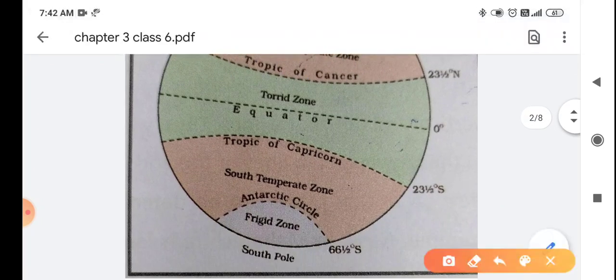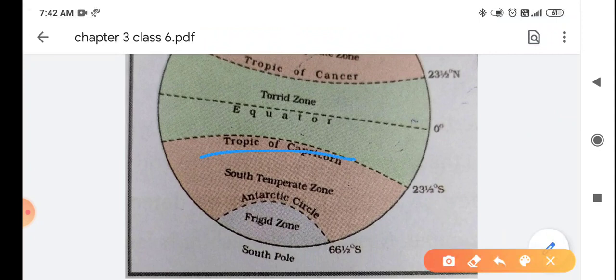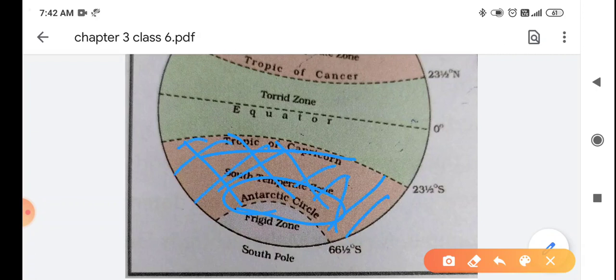This is Temperate Zone and it is in North side that is why it is called North Temperate Zone. And on the South side, Tropic of Capricorn and Antarctic Circle is this area that is Temperate Zone. And it is in South. So what do we call this? South Temperate Zone.